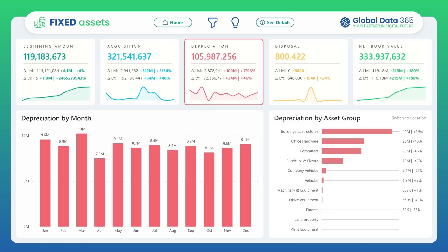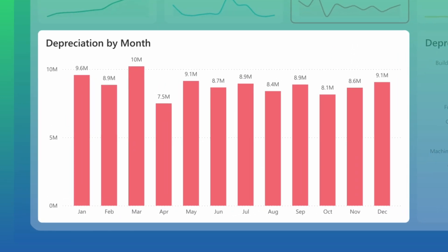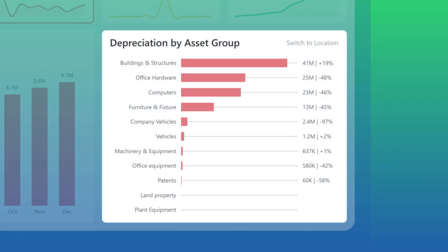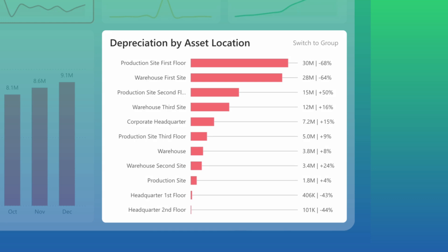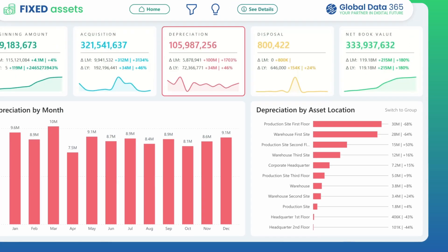Depreciation is next. By month, it showcases how asset depreciation affects your financials over time. And by asset group, you get a breakdown of depreciation cost allocation across different asset types with asset locations.